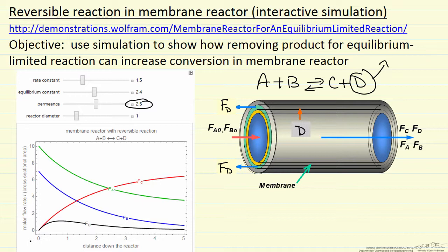Now we'll go and look at the simulation and look at how changing the rate constant, or the equilibrium constant, or the permeance, the flux divided by the driving force basically through the membrane, or the reactor diameter will change the flow rate of C. We're trying to increase or maximize the flow rate of C.